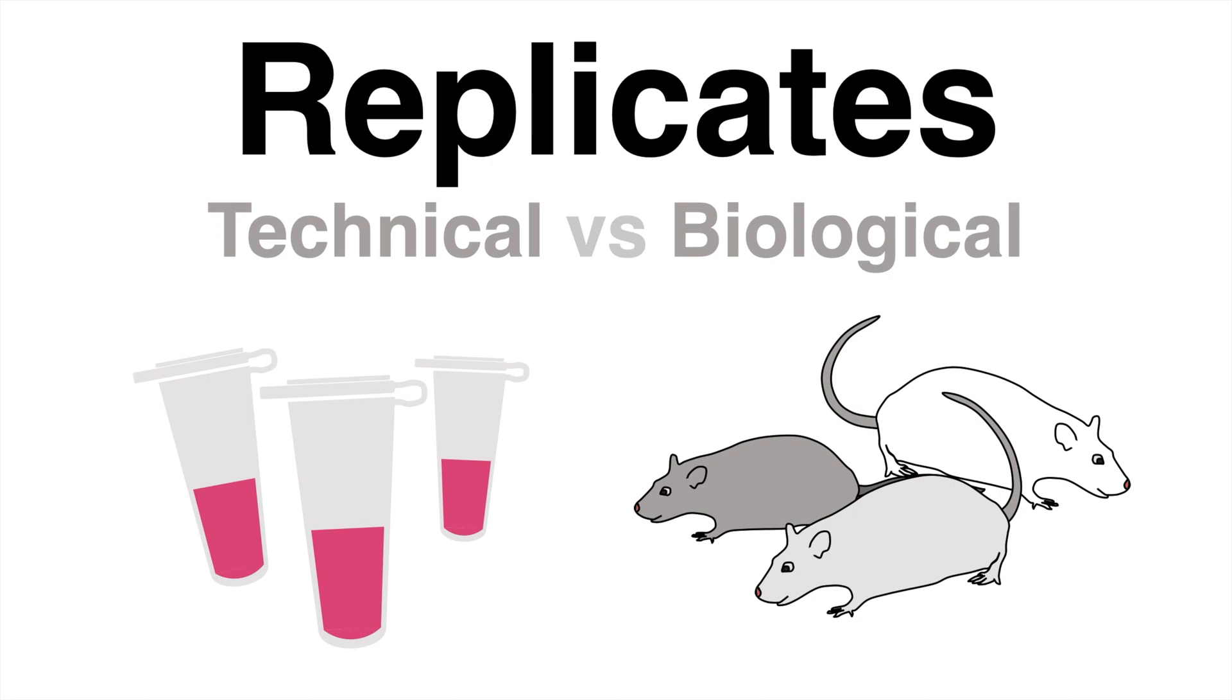Something that each scientist has in their toolbox to do proper statistics with their experimental data are replicates. Why do we need replicates and what is the difference between a technical replicate and a biological one? Those questions will be answered in this video.